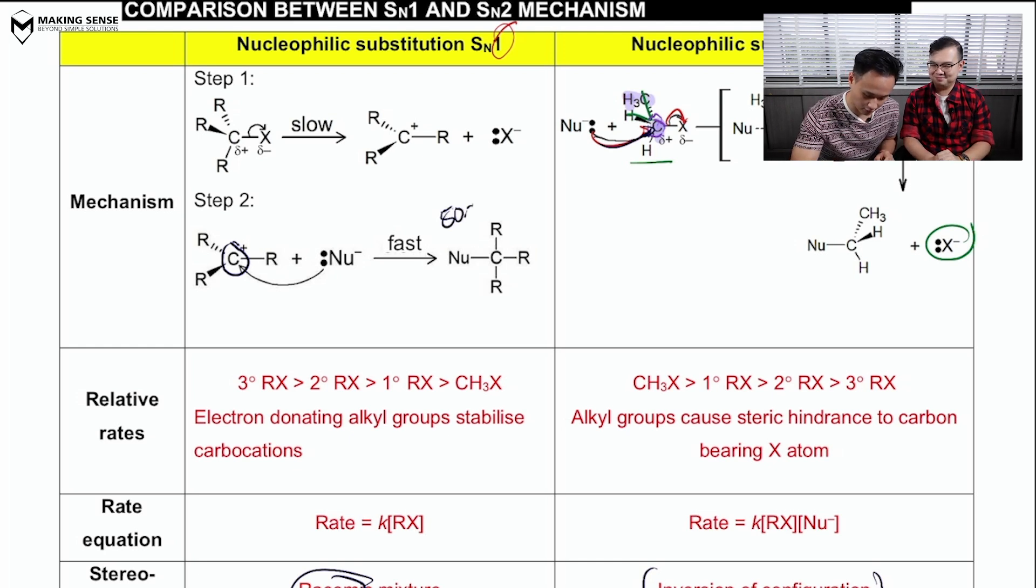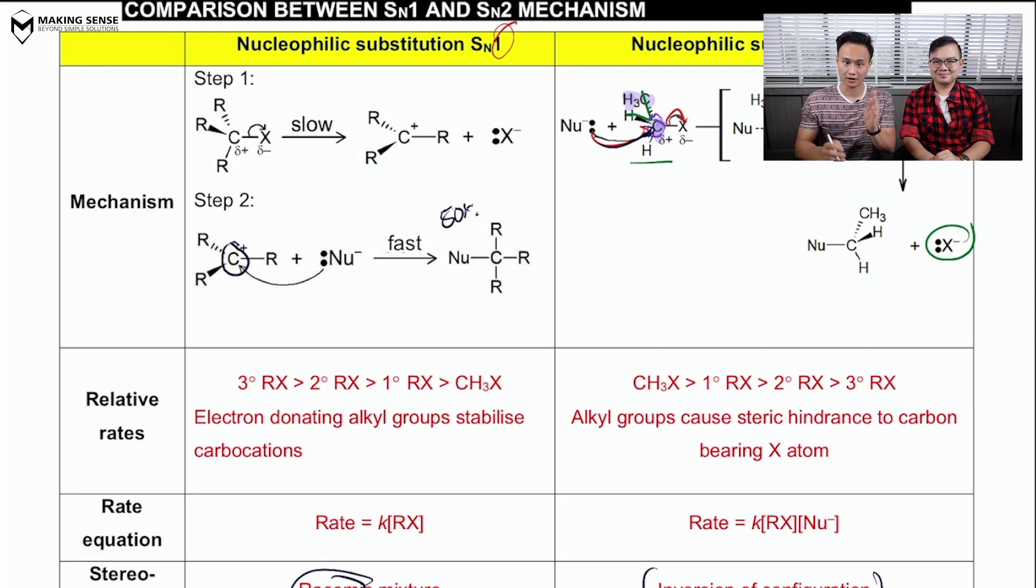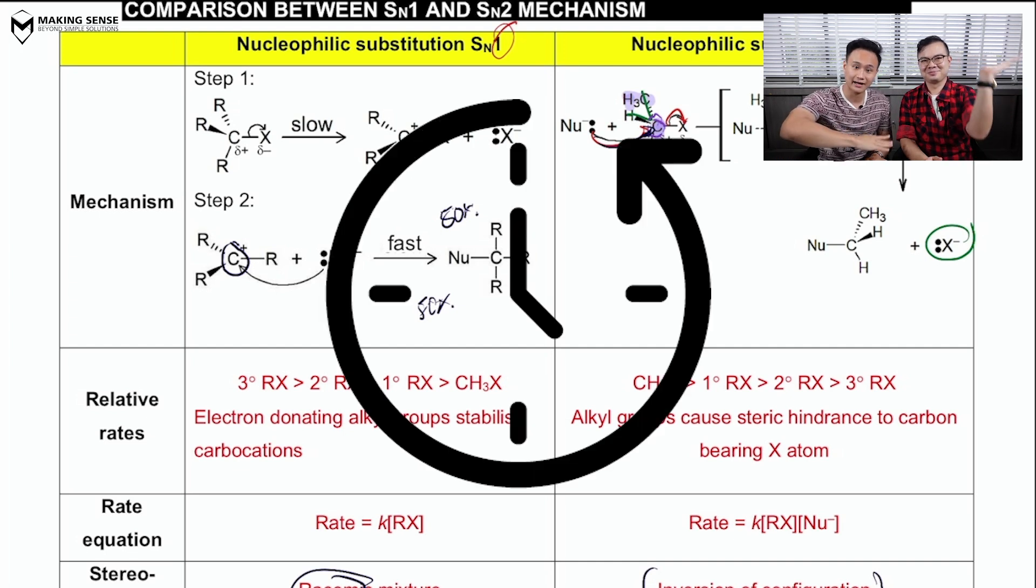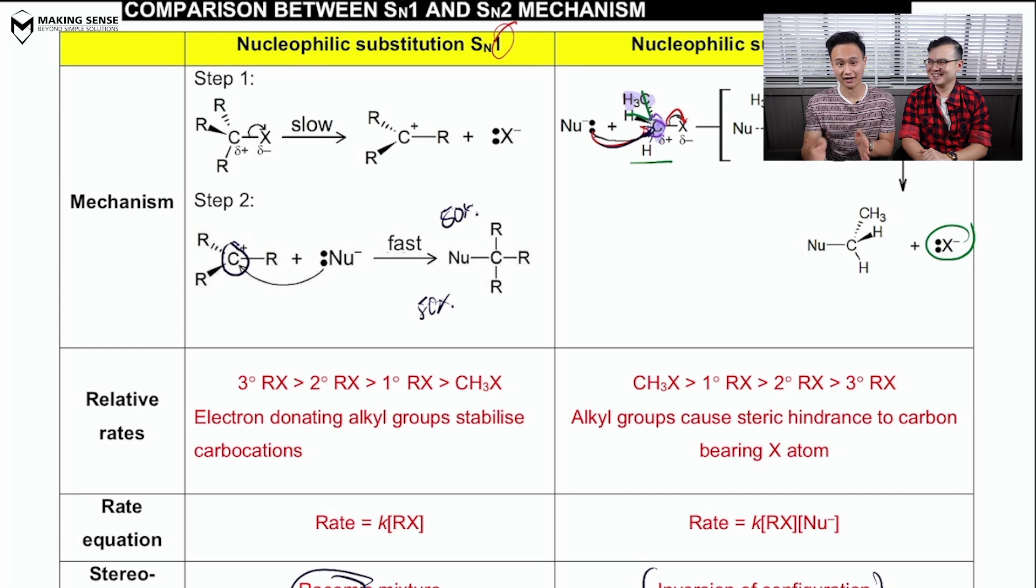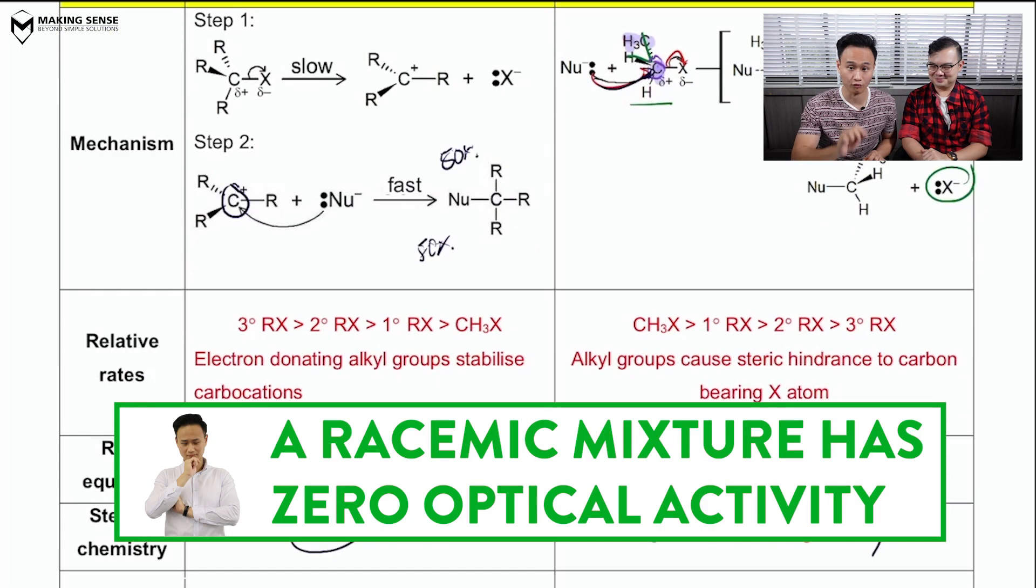Okay. And the other 50% will rotate plane polarized light counterclockwise. Now, in other words, the product mixture has zero optical activity. And now this is what we call a racemic mixture.